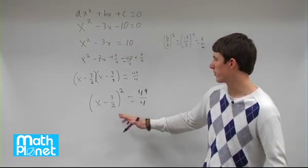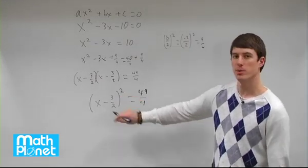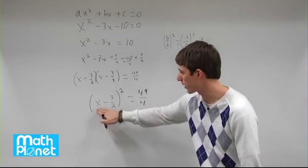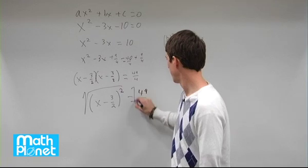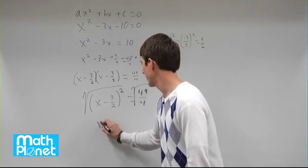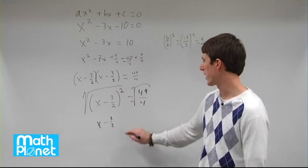Next thing we need to do is basically solve. We have a square here, which means we need to take the square root of both sides. We're digging out that x still. So let's do that. Take the square root. And that gives us x minus 3 halves here. This is simplified to that.